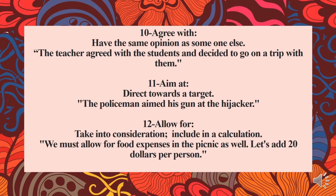The tenth phrasal verb is 'agree with,' which means to have the same opinion as someone else. Observe the sentence: The teacher agreed with the students and decided to go on a trip with them. Here the teacher shared the same opinion as the students who were planning a picnic, so 'agree with' enhances the meaning of having the same opinion.